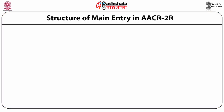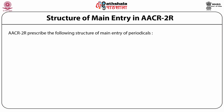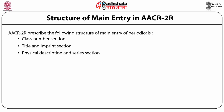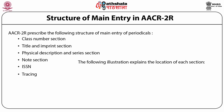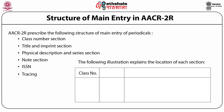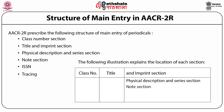Structure of main entry of AACR2R. AACR2R prescribes the following structure for the main entry of periodicals: first, class number section; second, title and imprint section; third, physical description and series section; fourth, note section; fifth, ISSN number; sixth, tracing. The first section, class number section, is noted in the margin on the leading line. The second section, title and imprint section, starts from the first vertical, with continuation from the second vertical. The third section is physical description and series section. The fourth is note section. The fifth is ISSN number section. The sixth is tracing.